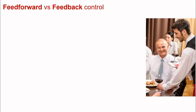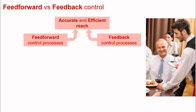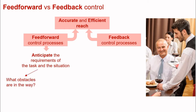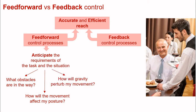We've discussed feedback and feedforward control previously, so let's expand upon these concepts. For an accurate and efficient reach, we're going to need both feedforward and feedback control processes. A feedforward control process is involved in anticipating the requirements of the task and the situation. For example, anticipating what obstacles are in the way, how movement will be affected by current posture, and how gravity will perturb the movement.